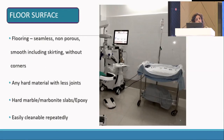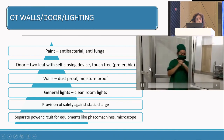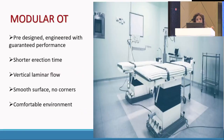Floor surfaces of the OT should preferably be tiles so that they are non-porous, seamless, and easily cleaned day after day. OT walls should be dust-proof and moisture-proof, with good lighting. Doors should be self-sealing with a door closer so that your OT nurses don't have to keep them open. Since we are dealing with costly machines like phaco and vitrectomy, there should preferably be a separate power circuit with a UPS backup. A modular OT for those who can afford it is great — it has guaranteed performance, shorter erection time, and vertical laminar flow.